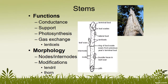Stems are used for support and also for conductance. They can perform photosynthesis — if you see a plant where the stems are green, that means it has chlorophyll or chloroplasts in the stems also, so it can perform a certain amount of photosynthesis. Some plants, especially trees, will use their stems for gas exchange also. They'll have little scars called lenticels where oxygen and carbon dioxide can enter into the stem.